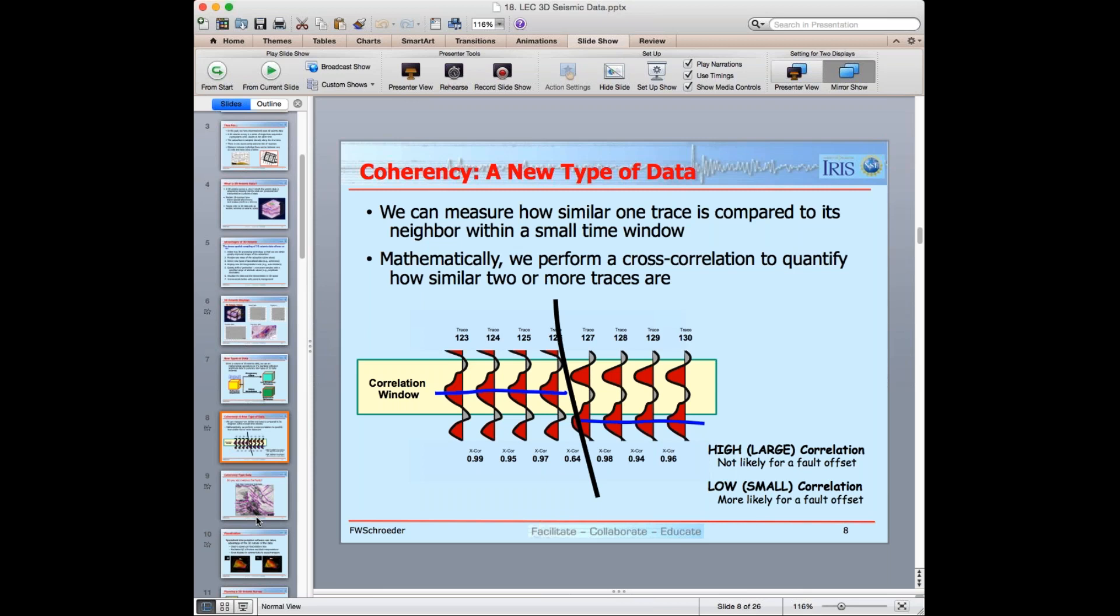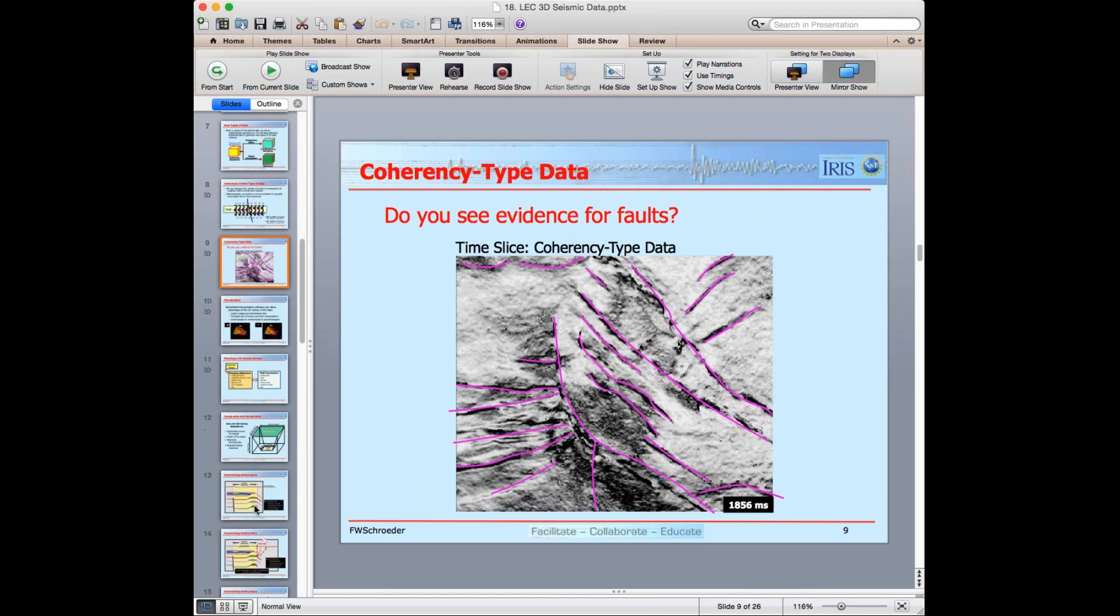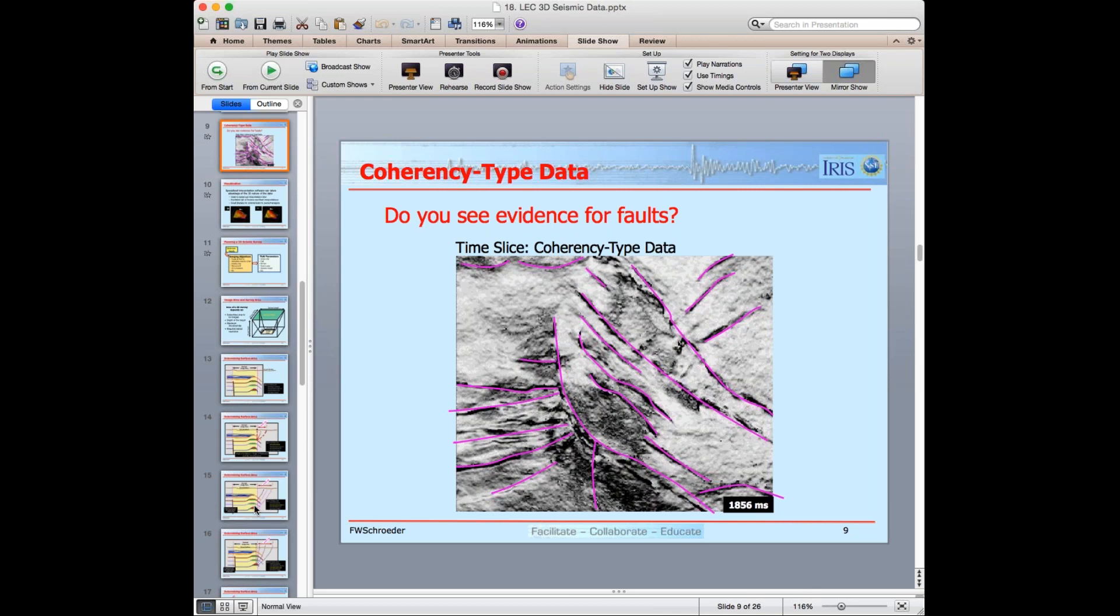So one reason we can get a low cross-correlation or a relatively low cross-correlation number is because the reflectors have been shifted slightly in time because of a fault offset. And so I click again. It says high or large correlations. Not likely to have a fault in between the two traces. I click again. It says low or small correlation. That is more likely a candidate for the presence of a fault. I click to the next slide. It says coherency type data. And it says, do you see evidence of a fault?